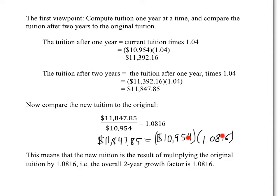What does that tell us? It means that the new tuition is the result of multiplying the original tuition by 1.0816. In other words, the overall two-year growth factor is 1.0816. Multiplying by this number captures two years worth of growth.